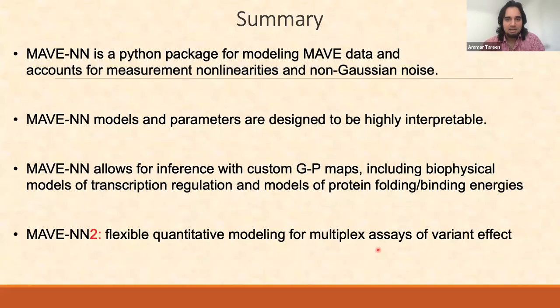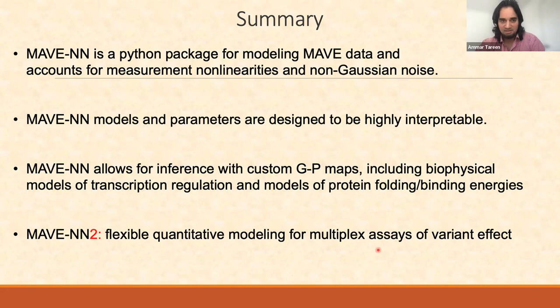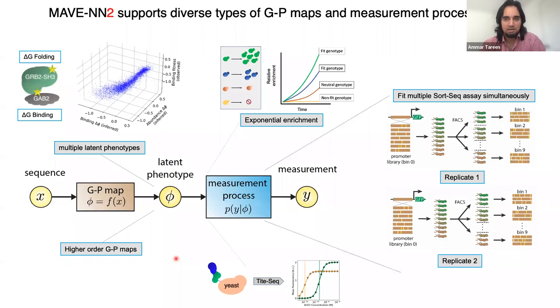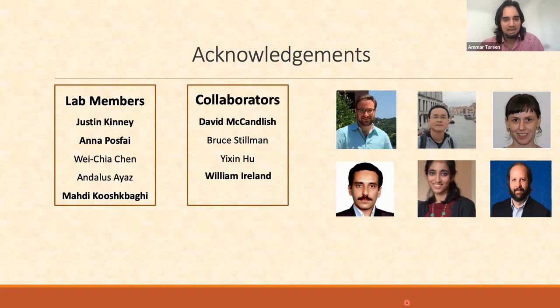In summary, MAVE-NN is a package that can infer quantitative models of sequence-function relationships — genotype-phenotype maps — from MAVE data using global epistasis regression and measurement process agnostic regression. I'm currently working on MAVE-NN 2, which I'm calling flexible quantitative modeling for multiplex assays of variant effect, fleshing out capabilities including replicate measurements, specific measurement processes, and multiple phenotypes. I'd like to thank my colleagues at Cold Spring Harbor Lab and my current team at Regeneron. I apologize for going slightly over time but I'm happy to take questions.